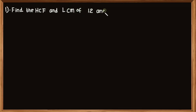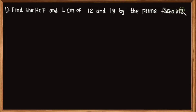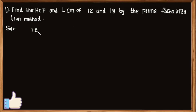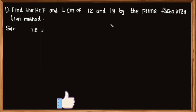Problem number one: find the HCF and LCM of 12 and 18 by the prime factorization method. First, write the given numbers as product of prime factors.